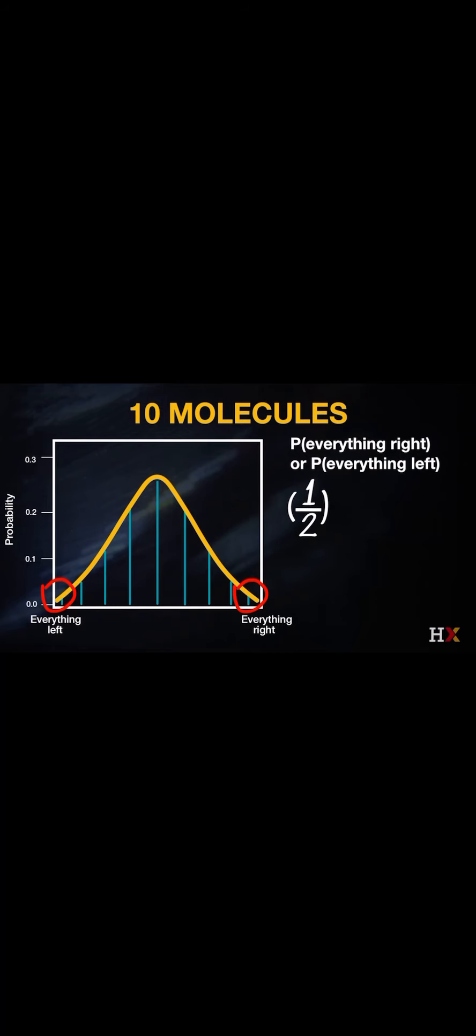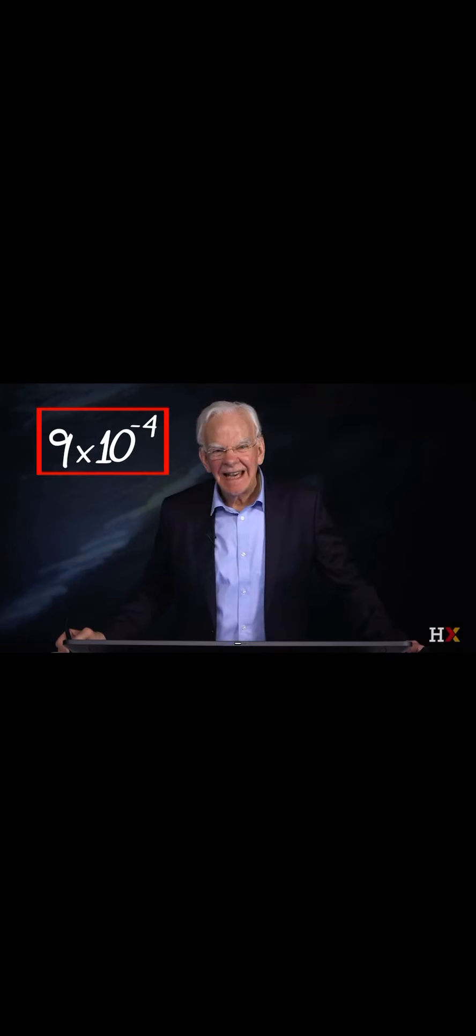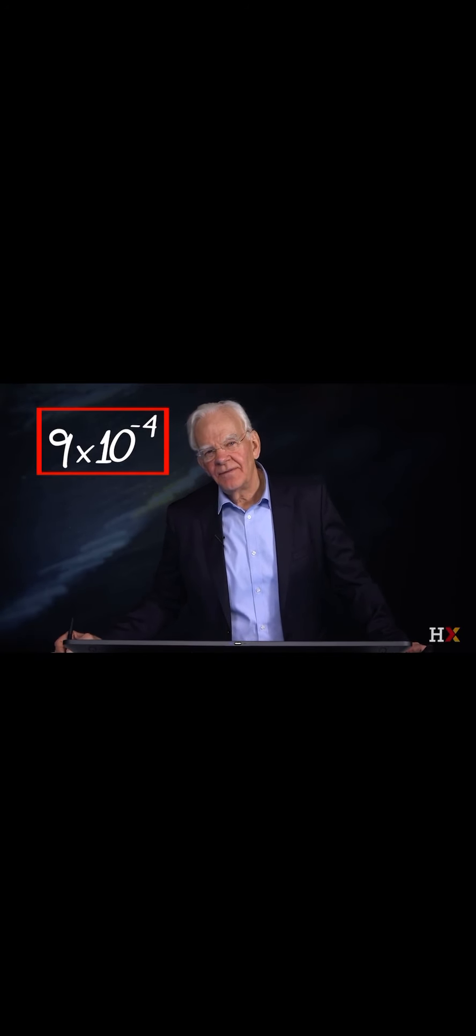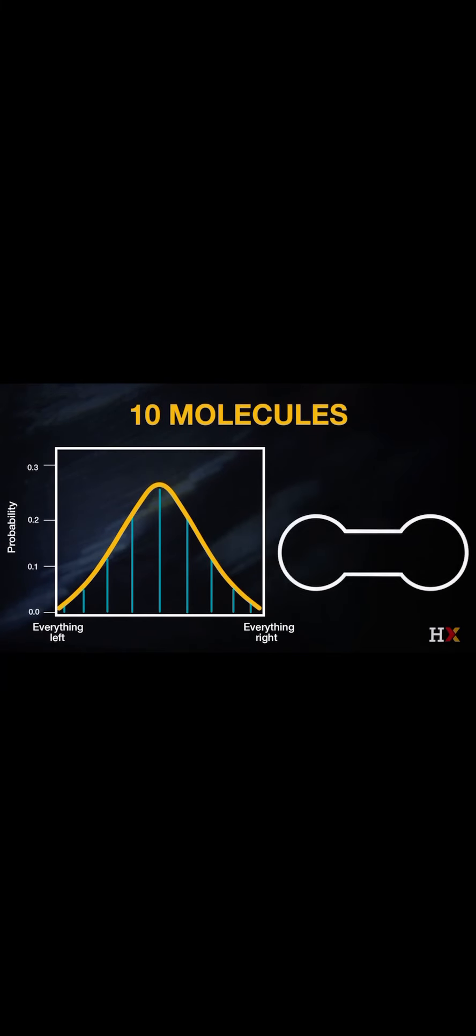That's one-half raised to the number of particles in the system. That's one-half to the tenth power, and that gives us probability of 9 times 10 to the minus 4, a tiny probability that everything is sequestered on the right versus the left. The most probable distribution is one where we have five molecules on the left and five molecules on the right. That's the condition of peak probability.